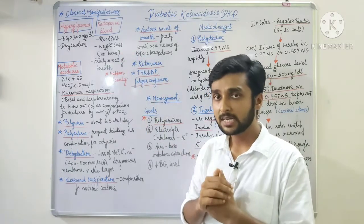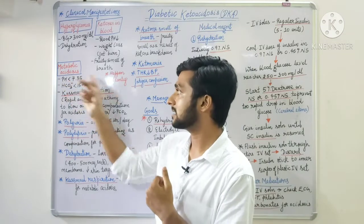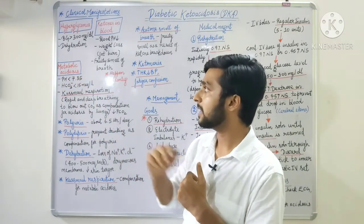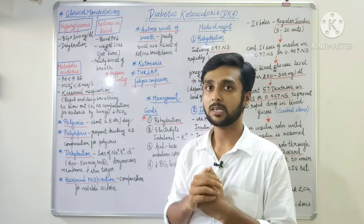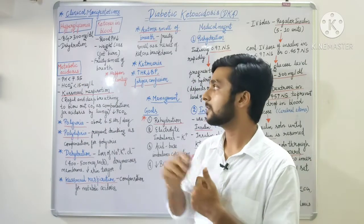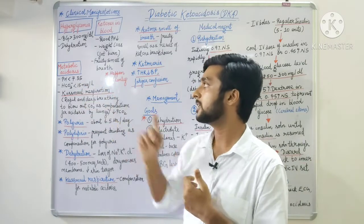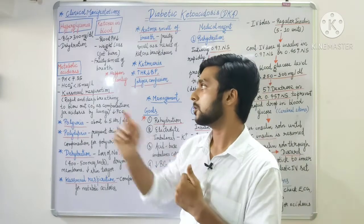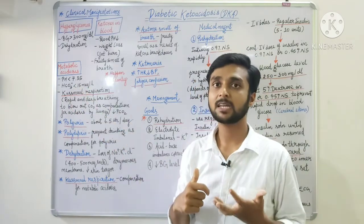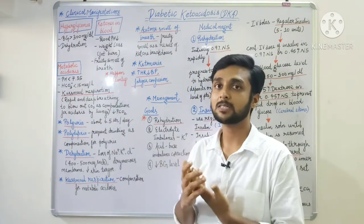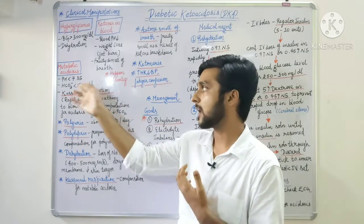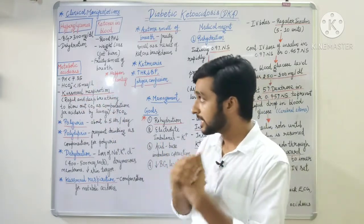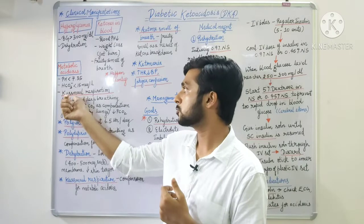Because of ketosis, bicarbonate level will be less than 15 milliequivalents per litre. Bicarbonate is basic in nature, and here we get more acid levels, so bicarbonate is depleted. This leads to metabolic acidosis.